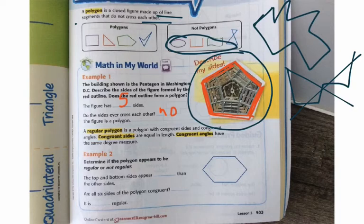So we need to look at this. Does this appear to be a regular polygon or not a regular polygon? The top and bottom appear to be regular, right? Although these two appear to be actually maybe longer than the other sides. This seems to be a little bit longer, so I would put right here longer than the other sides.